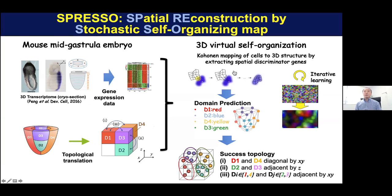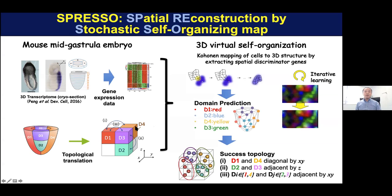We performed 3D virtual self-organization mapping based on a well-known Kohonen mapping strategy. And after we obtained the structure, we checked the success rate by confirming three conditions, which is the consistency of the original structure — such as D1 is opposite D4, D2 and D3 are next to each other, and so on.